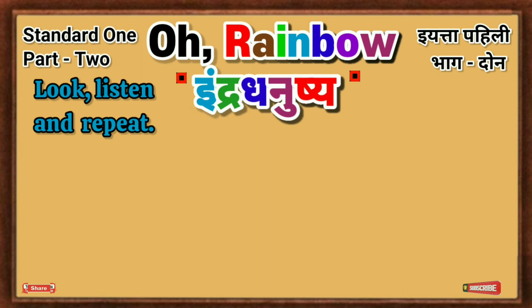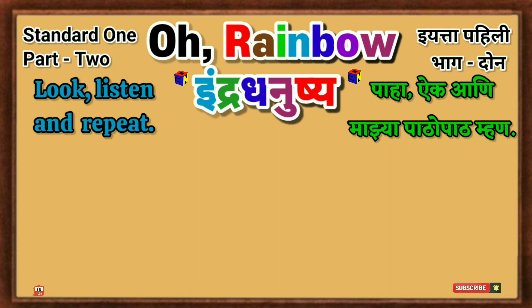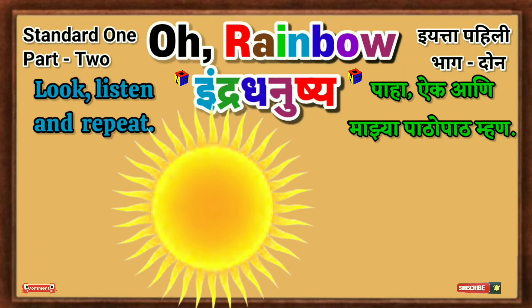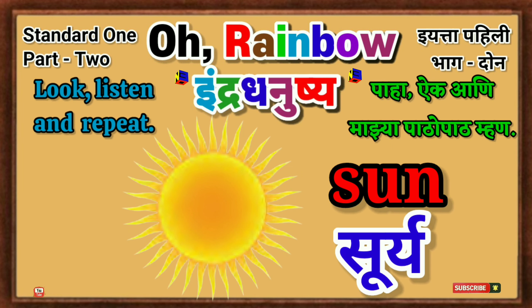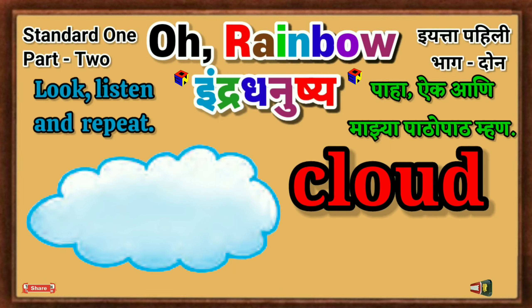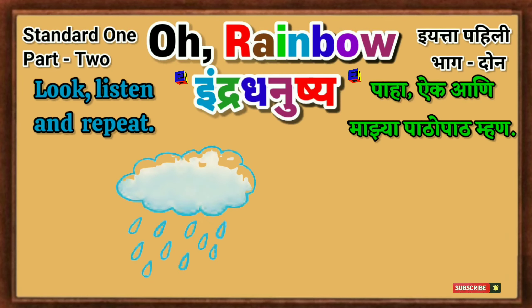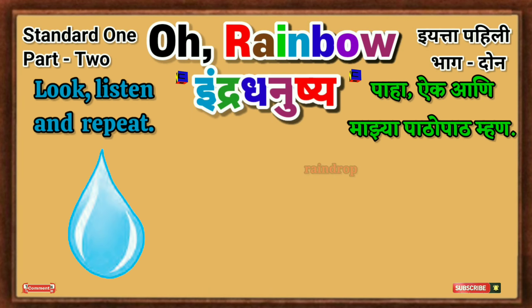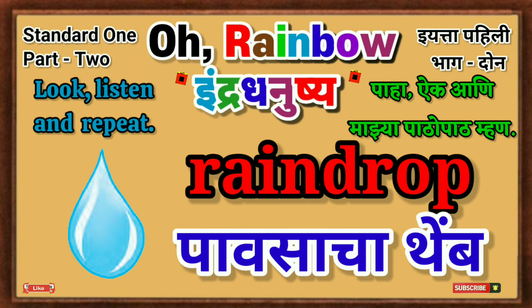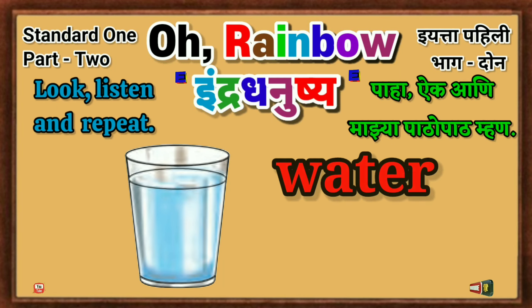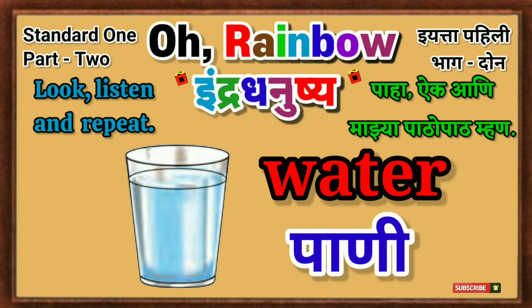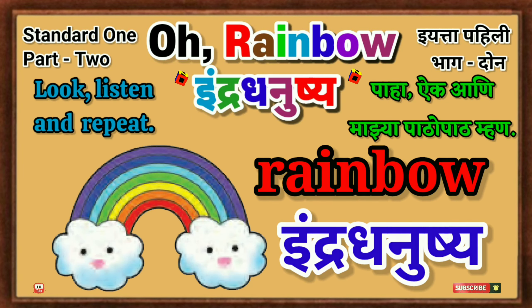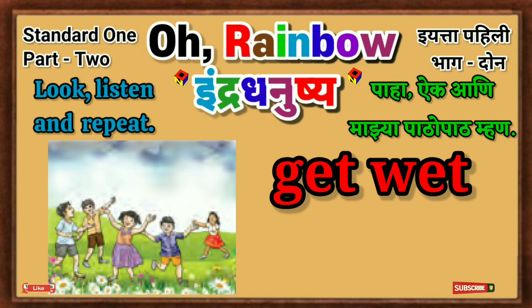Look, listen and repeat. Paha, aikani maja paatho paathaman. Sky — Akash. Sun — Suriya. Cloud — Lug. Rain — Paus. Raindrop — Pausasathem. Water — Pani. Rainbow — Indra Dhanushya. Get wet — Bizane.